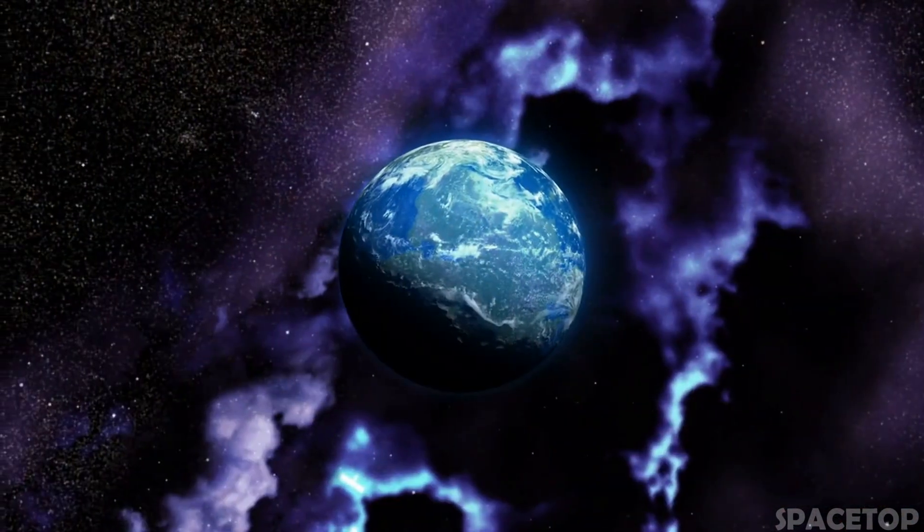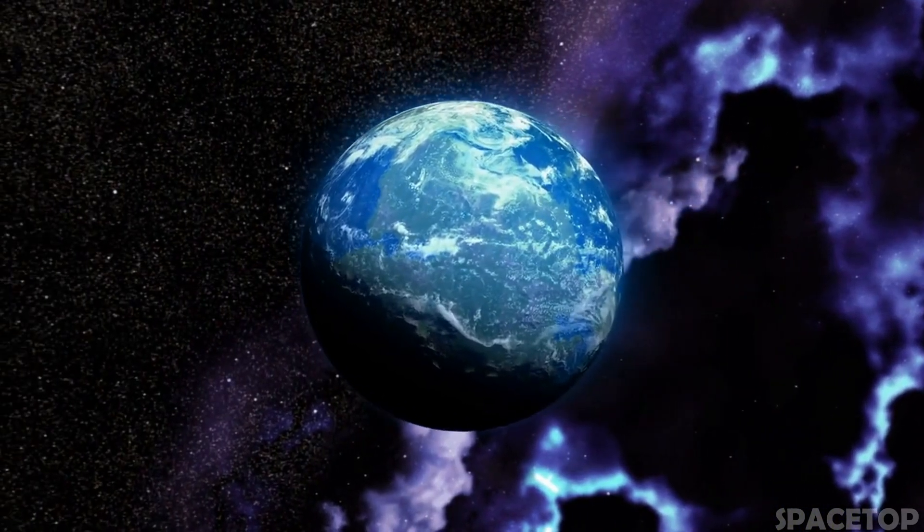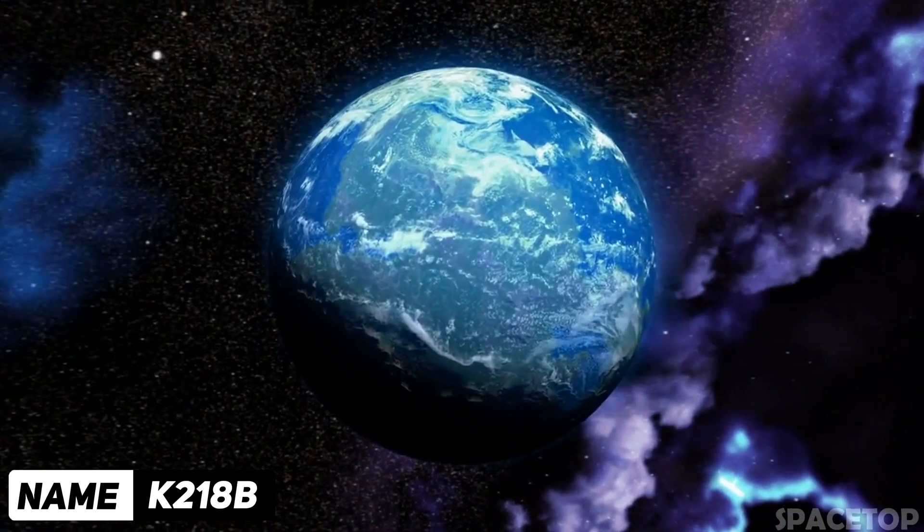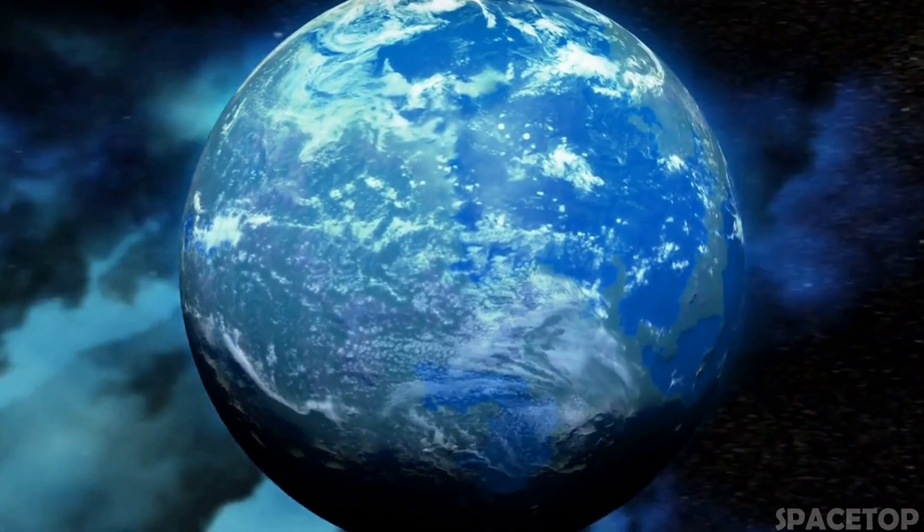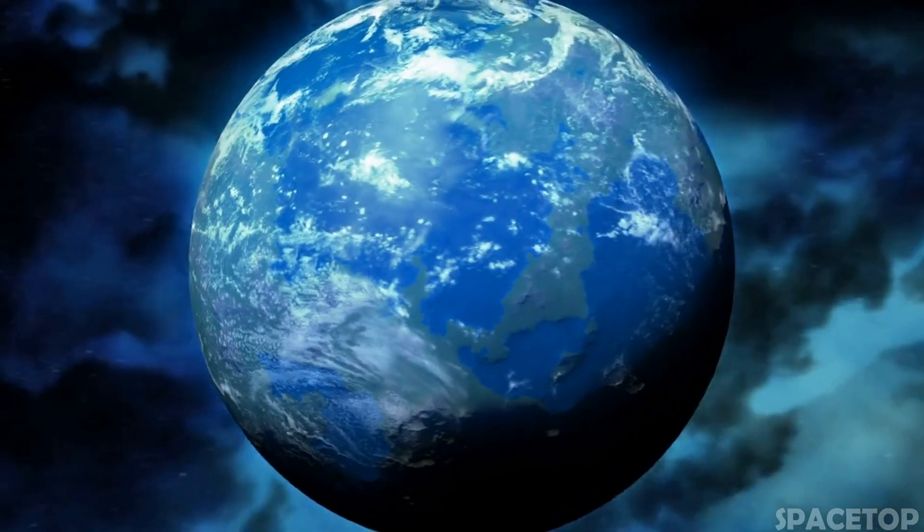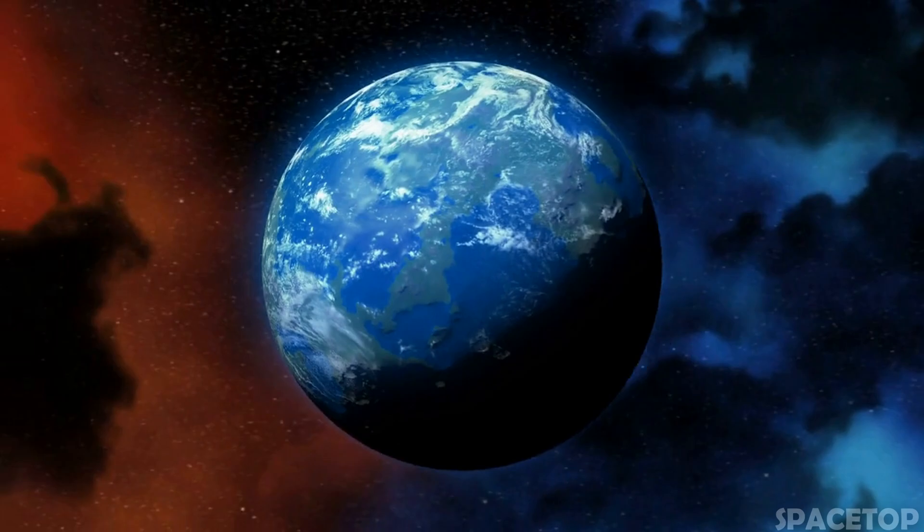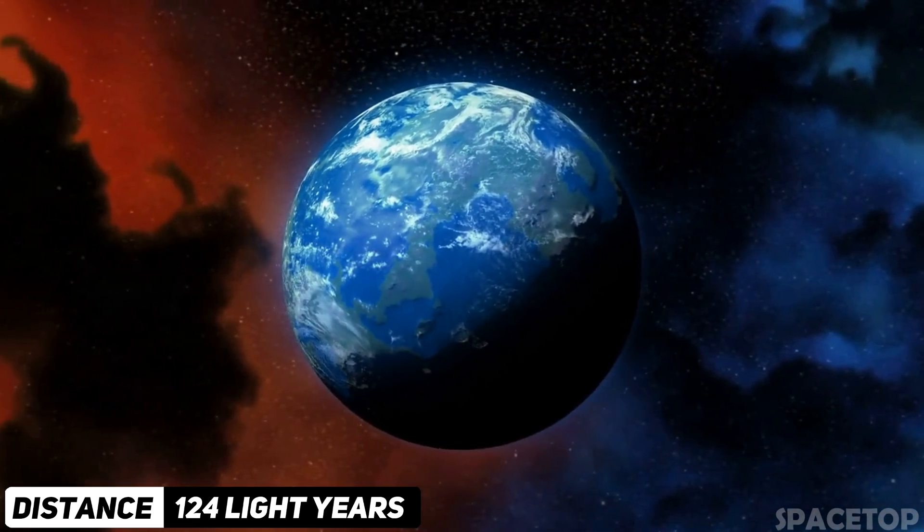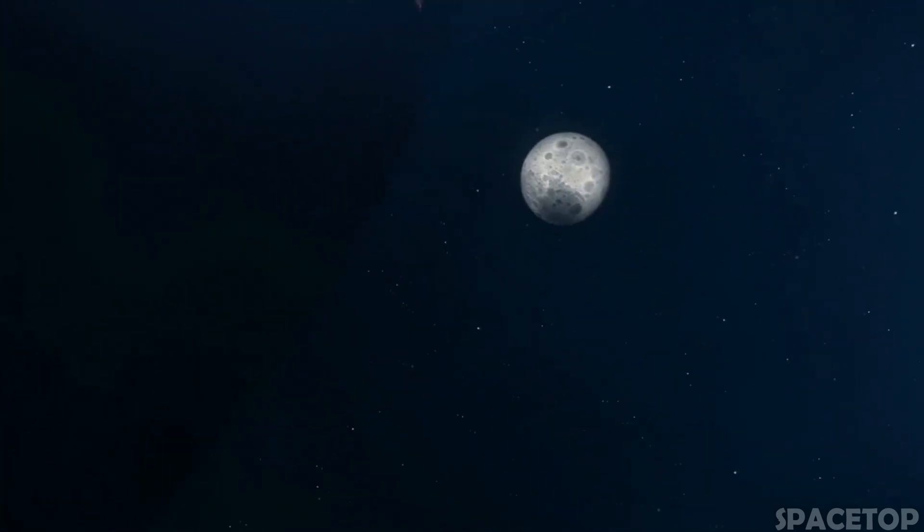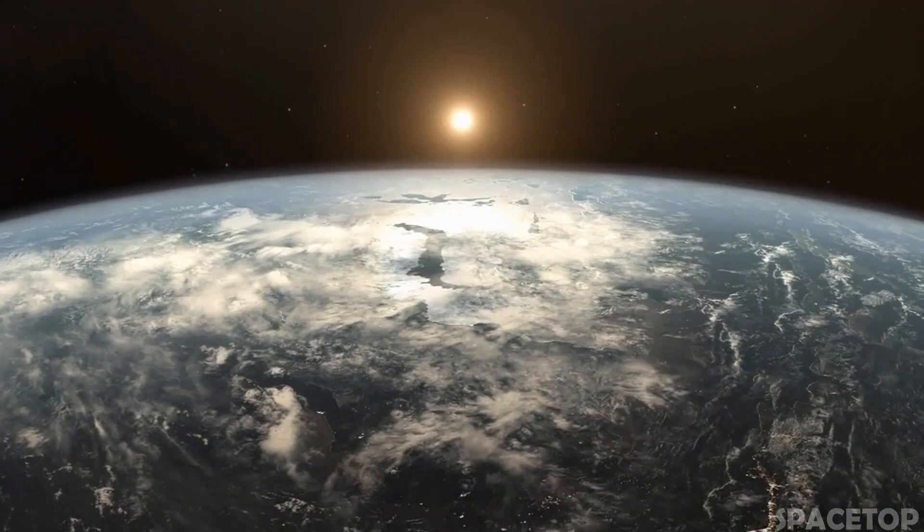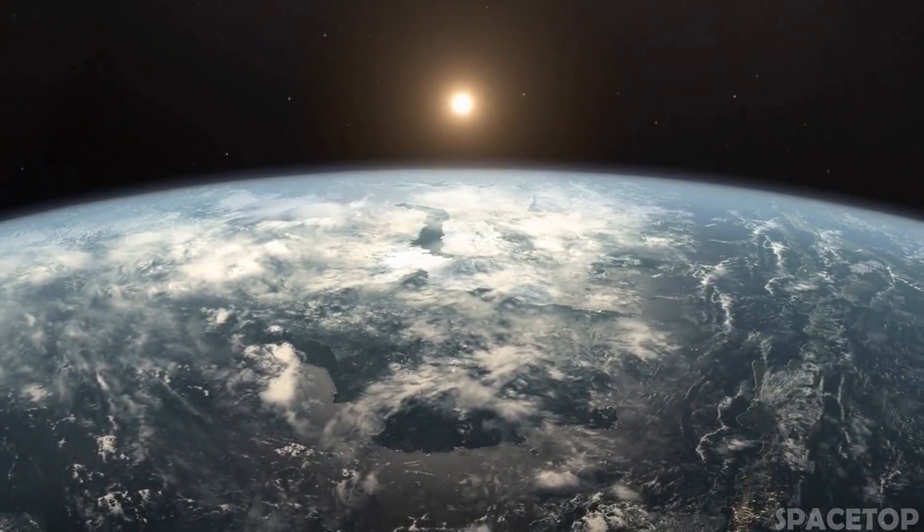One of these exoplanets discovered by Kepler has recently caused a stir among researchers called K218b. In September 2019, two scientific groups independently announced that they had detected signs of liquid water in the atmosphere of a planet located at a distance of 124 light years from Earth. Scientists also said that the star of this planet is quite stable, which suggests that the planet has a quite suitable temperature for life, similar to our Earth.